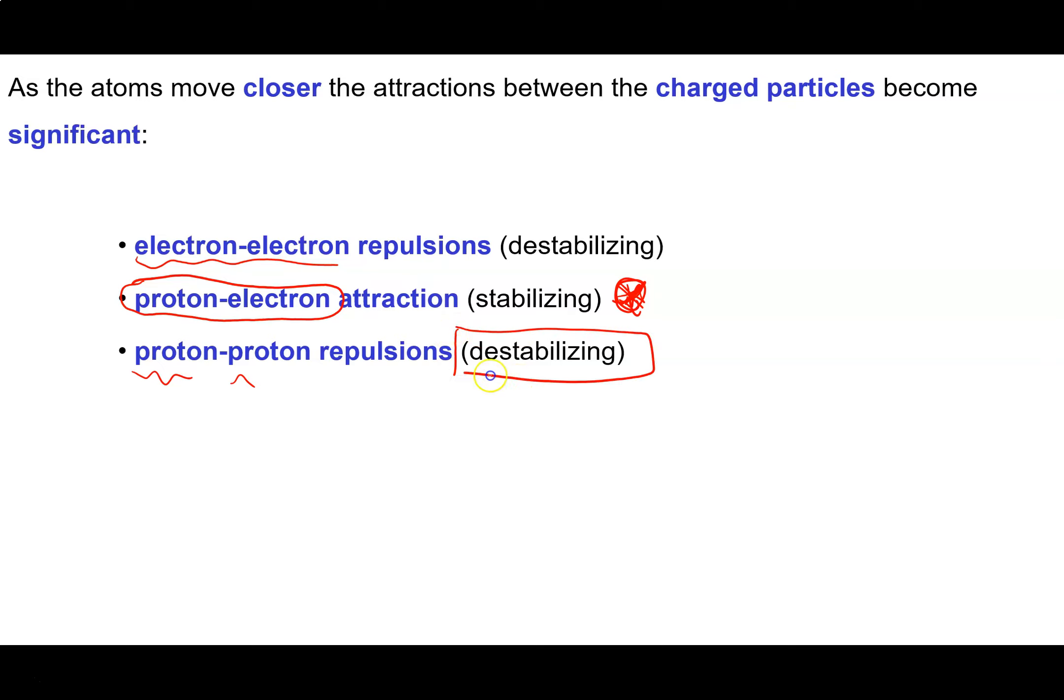And this is something that's going to destabilize the formation of a bond between these two atoms. So the question becomes, is there an arrangement of particles where this stabilizing proton-electron attraction becomes the dominant force and the two atoms become stuck to one another.